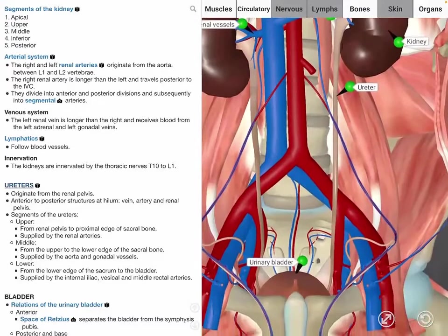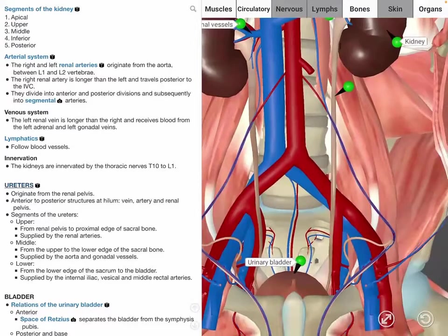The middle segment, which is from the upper to lower edge of the sacral bone, is supplied by the aorta, common and internal iliac arteries, as well as the gonadal artery.